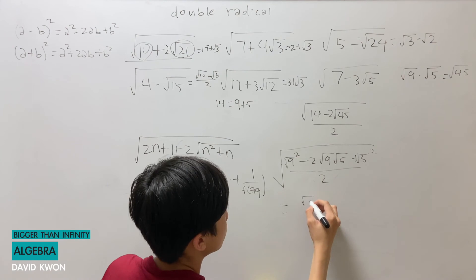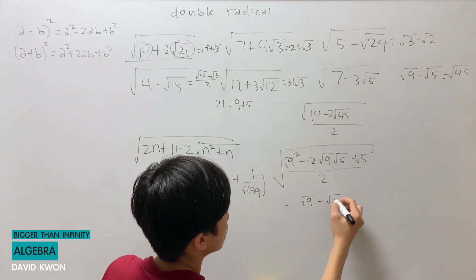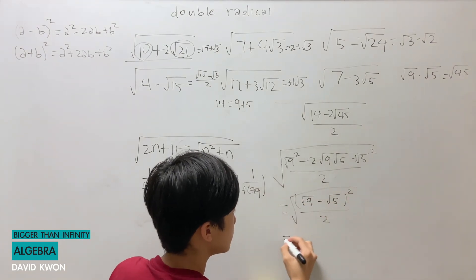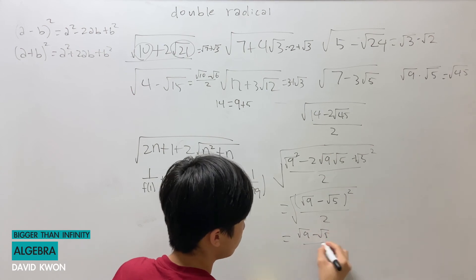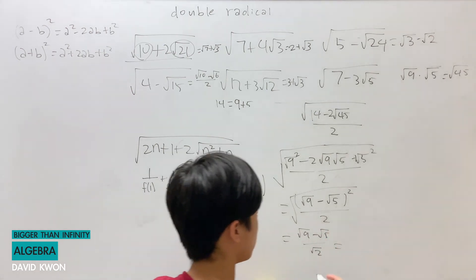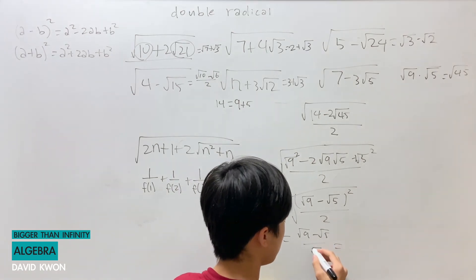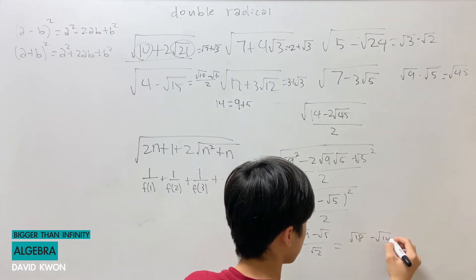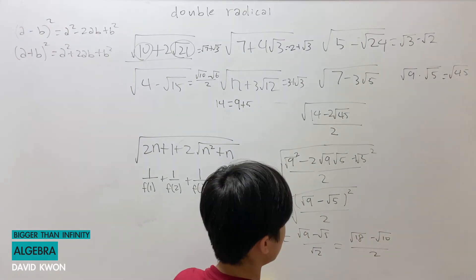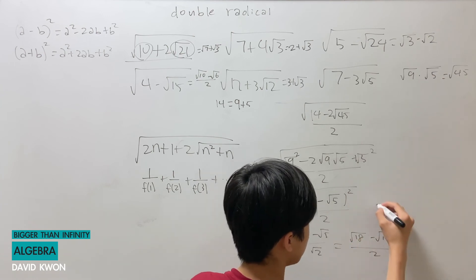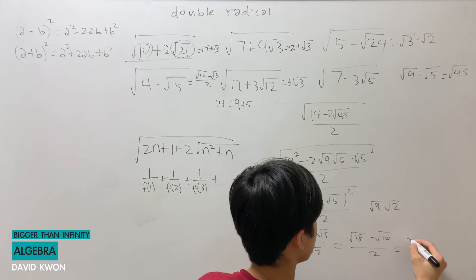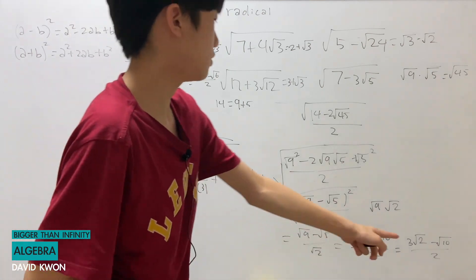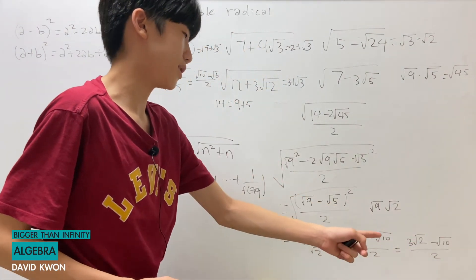The numerator is (square root of 9 minus square root of 5) squared over 2, with the outer root. This equals (square root of 9 minus square root of 5) over square root of 2. Most teachers would want you to not have a radical on the denominator. So we rationalize: square root of 9 times square root of 2 is 3 times square root of 2, giving the final answer as (3 times square root of 2 minus square root of 10) over 2. This answer is better than the unrationalized forms.